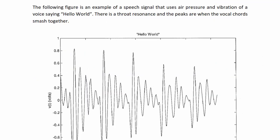The following figure is an example of a speech signal using air pressure and vibration of a voice saying the word 'hello.' This is a throat resonance, and the peaks are when the vocal cords come together. Normally the frequency is between 15 Hz and 20 kHz. You can have a tonal or voiced sound, such as in 'hello,' which has a pitch and frequency — hence the oscillatory behavior — or a non-tonal sound like the consonant 'S,' which involves no vocal cord vibration and would look more like noise if plotted.